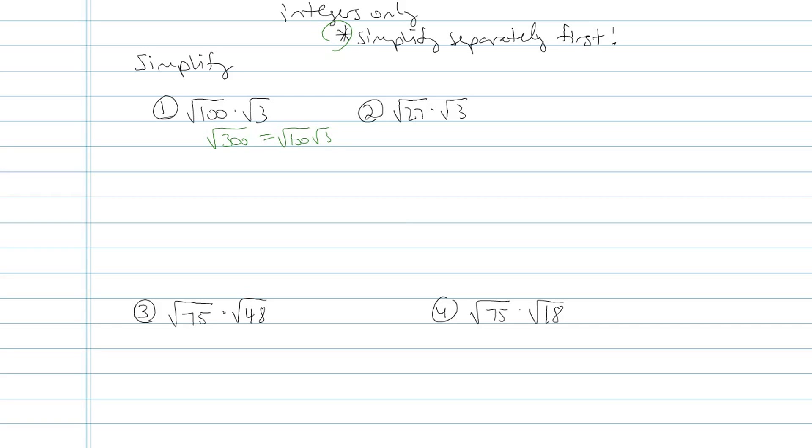Instead of multiplying those things under the square roots, which of course is mathematically valid, try simplifying them first. Square root of 100, we know what that is, that's 10. Square root of 3, don't know what that is, so I'm just going to leave it as 10 root 3. That's what I mean by simplify separately first.